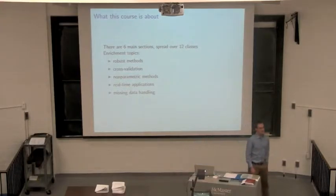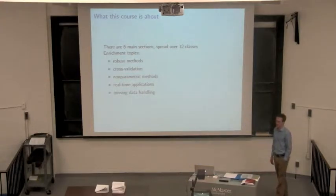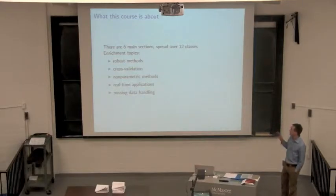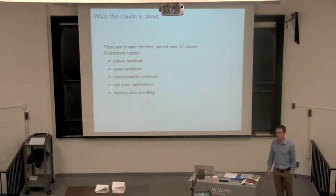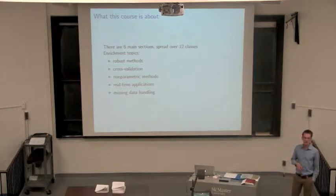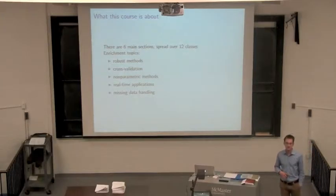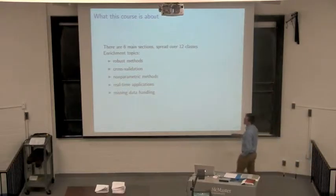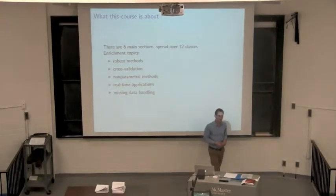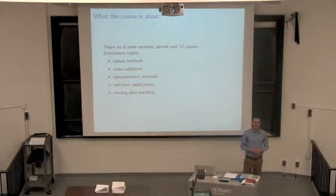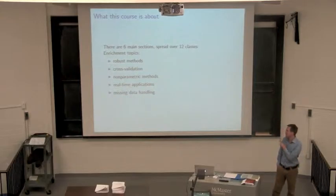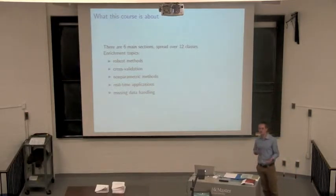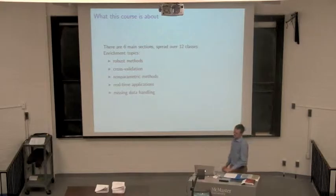There are six major sections of the course. Beyond those six sections, there are also enrichment topics I hope to cover. These are not in the course syllabus, so they're not examinable. Often I won't have time to cover them, but they'll be in the printed notes for you to go through — things like robust methods, cross-validation, missing data handling. These are all topics that are really becoming important these days. If you read any of the current research on data analysis and data mining, these are the topics that are discussed. So I hope to bring some of that in throughout the six sections.